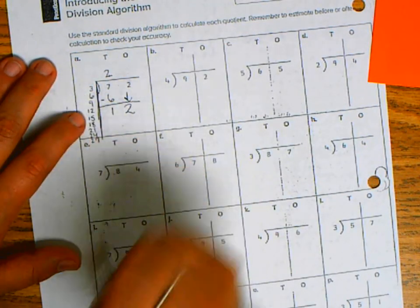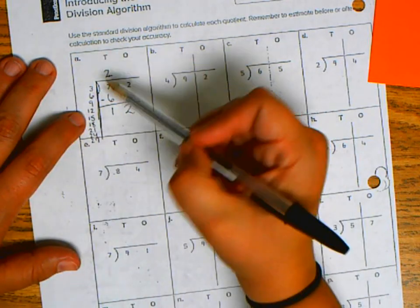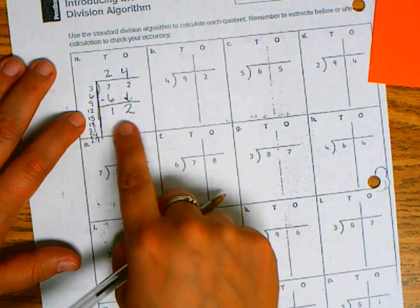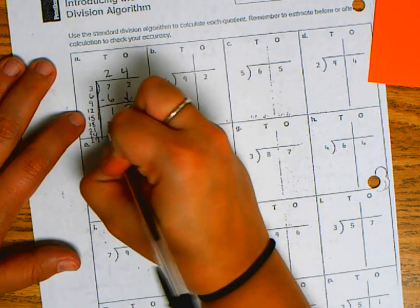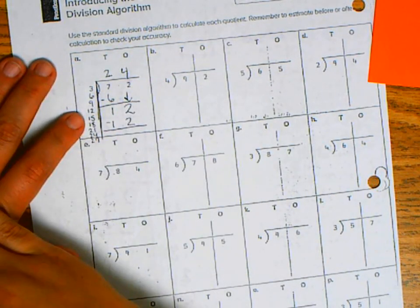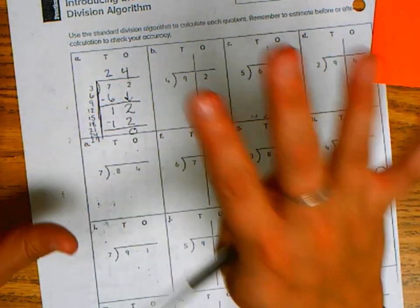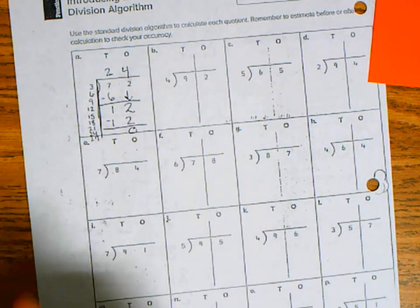Now I'm going to divide and then multiply. Well, 4 groups can go into 12 and subtract. So I'm subtracting the number 12. 12 minus 12 is 0. I don't have anything to bring down. I'm done. So my answer, my quotient, is 24.